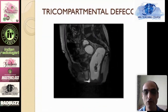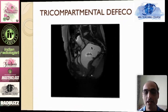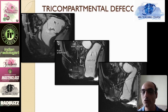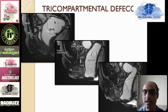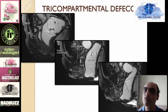Another example of tricompartmental defecography. All three compartments show significant descent below the pelvic floor — they are all going well below the pubococcygeal line — which is known as descending perineum syndrome. This is typically seen in older patients or women with multiple childbirths and carries a poor prognosis because the entire pelvic floor tone is very poor and surgery cannot fully fix that. The descents are graded as mild (0–3 cm), moderate (3–6 cm), and severe (more than 6 cm). A mild descent of 0–3 cm is physiological and normal during defecation.